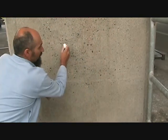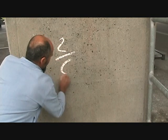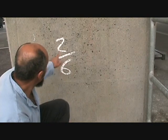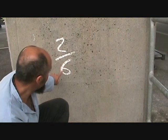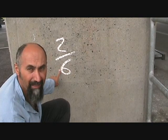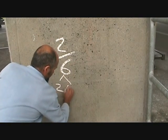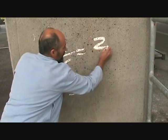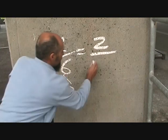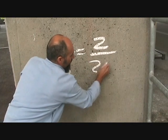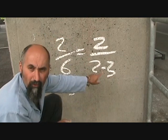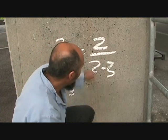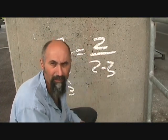Take the fraction 2 over 6 — we're going to start off easy. Number 2 is a prime number. Number 6 is made up of 2 times 3. So 2 over 6 can really be written as 2 over 2 times 3. With fractions, any number from the top can cancel out any number from the bottom.